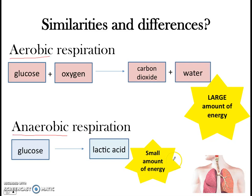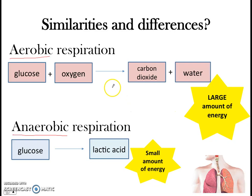I suggested in the last video that normally in human muscle cells, the default mode is aerobic respiration, because the muscle cells would want to produce as much energy as possible. In this video, we're going to look at what happens in our body when we go for a run, applying the concepts of aerobic and anaerobic respiration to this situation.